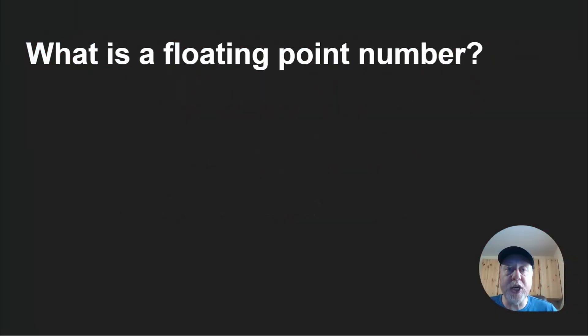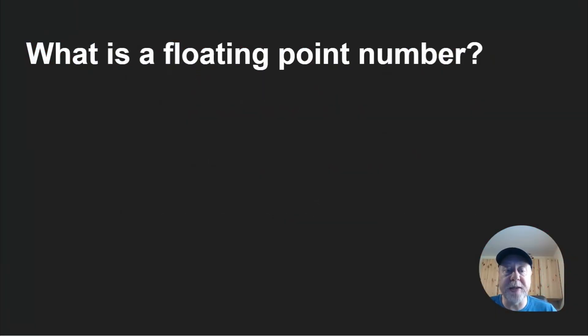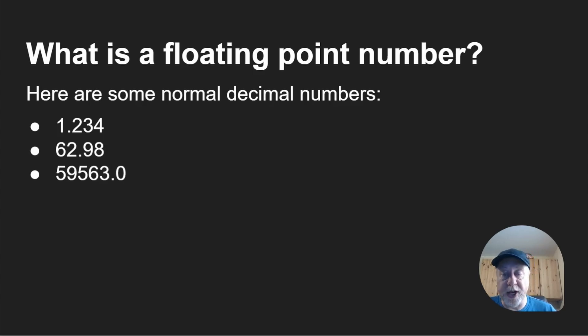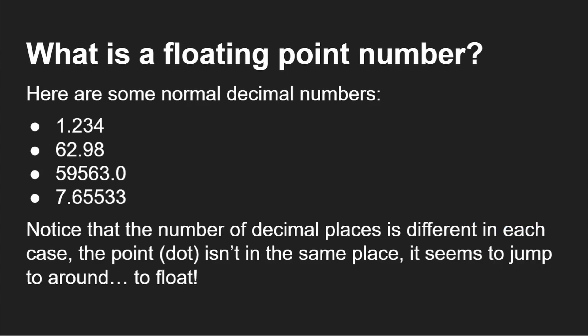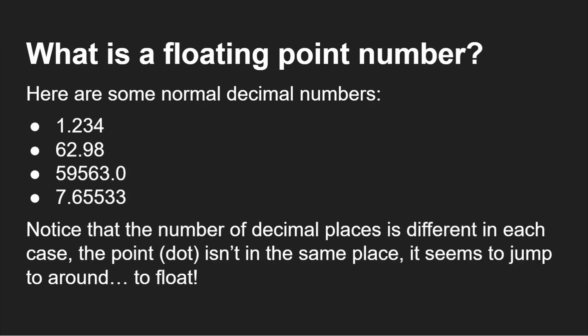Just a quick recap: what are floating point numbers? If you look at some decimal numbers like 1.234, 62.98, and so on, you can see the decimal point is in a different position. The number of digits after the point changes — sometimes three, sometimes two, sometimes one. The decimal places differ in each case; the point isn't in the same place — it seems to jump around, to float.